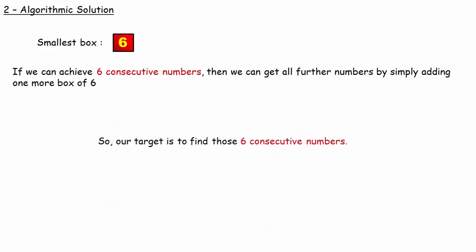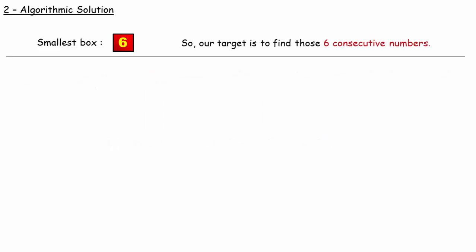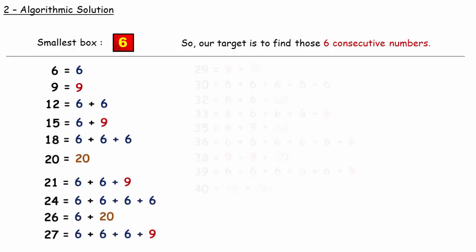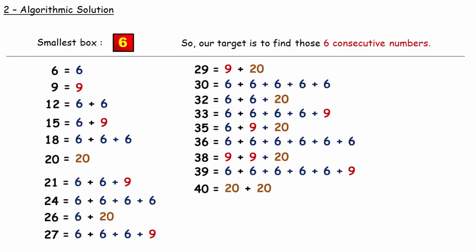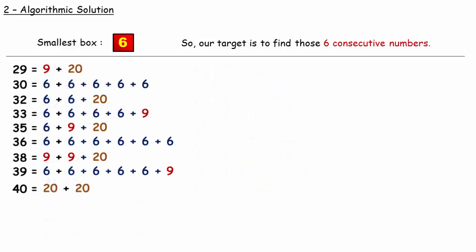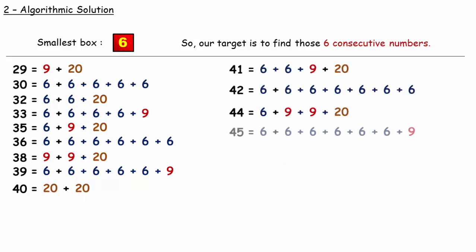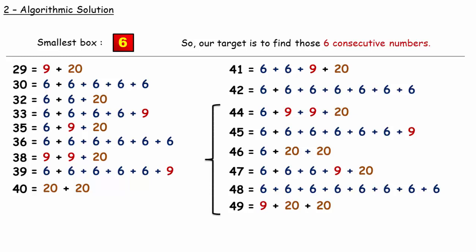So our target is to find those 6 consecutive numbers. Let's make combinations to achieve numbers of nuggets in increasing order. You get 6 consecutive numbers from 44 through 49. And that's why we can achieve all numbers 49 onward with the use of one more box of 6.